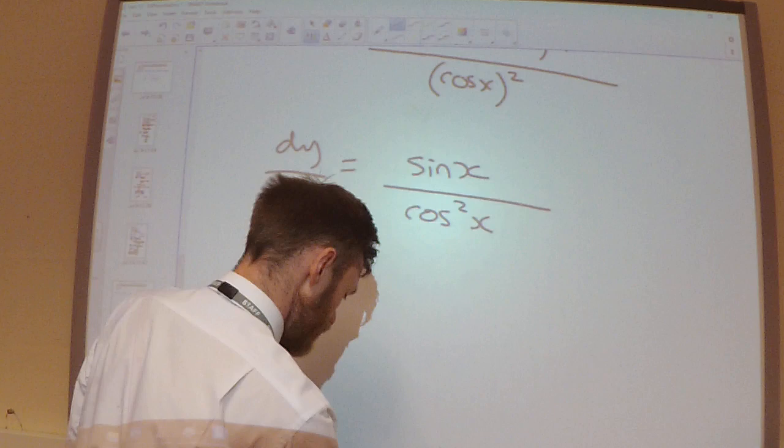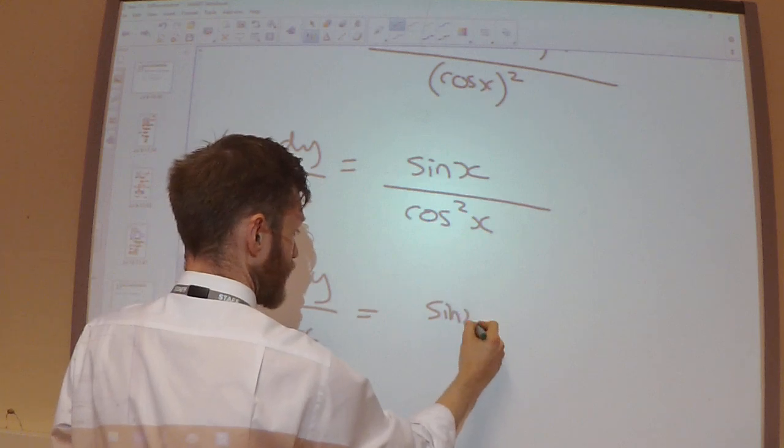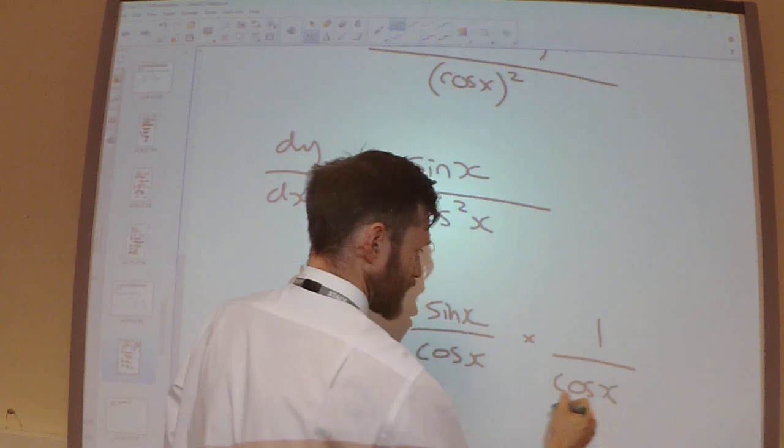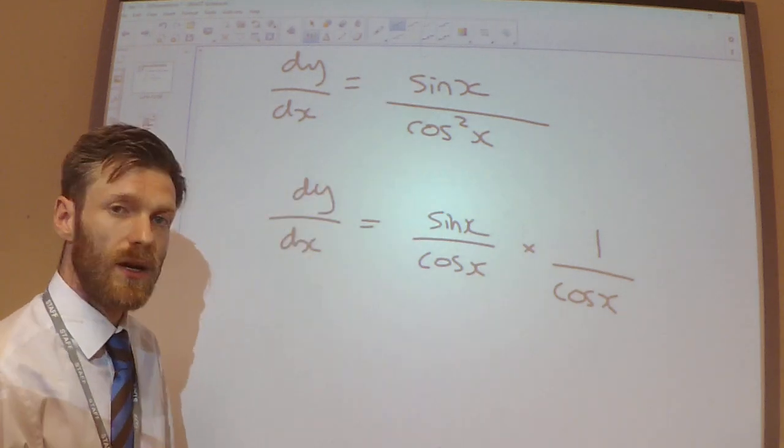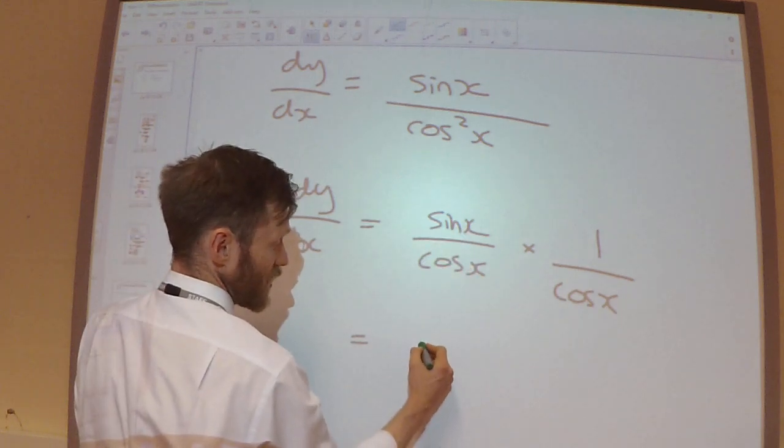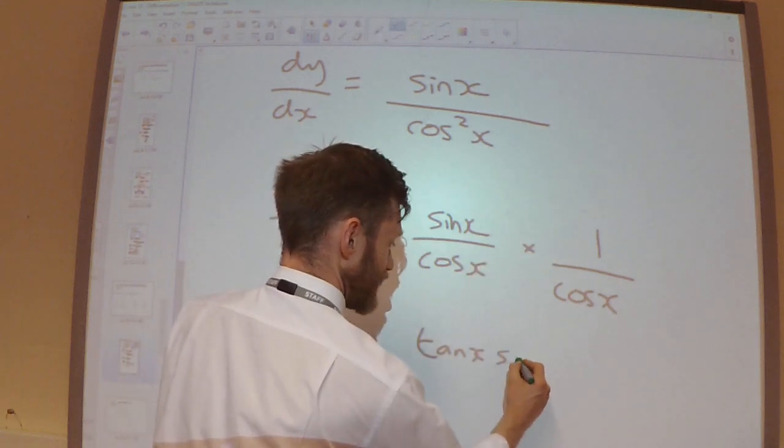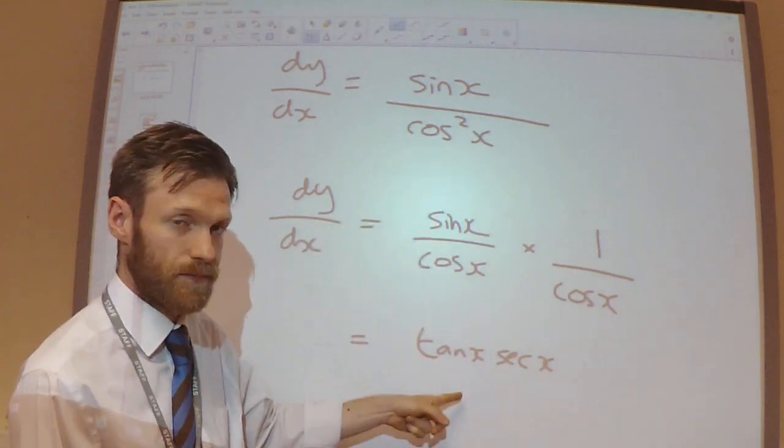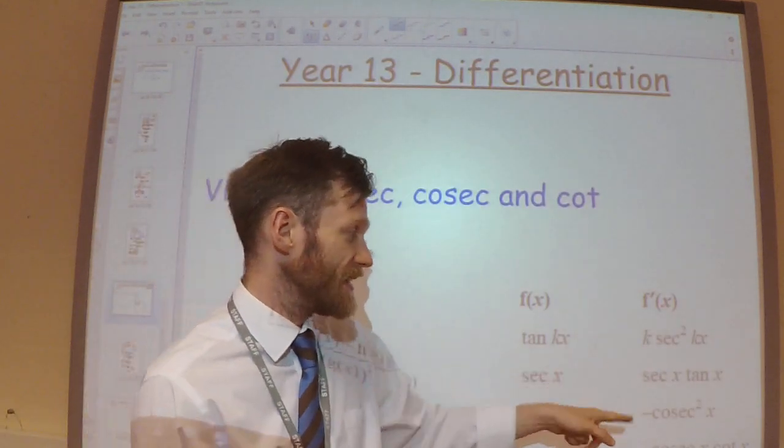This, however, I could write, if I wanted to, I could write this as being sine x over cos x multiplied by 1 over cos x. Hopefully you can see this is the same as this. And it just means that I can rewrite the sine over cos as being tan x, the 1 over cos as being sec x. And this is a bit nicer to write than this, even though they're the same thing. So there we go, we've proved that the derivative of sec x is sec x tan x.